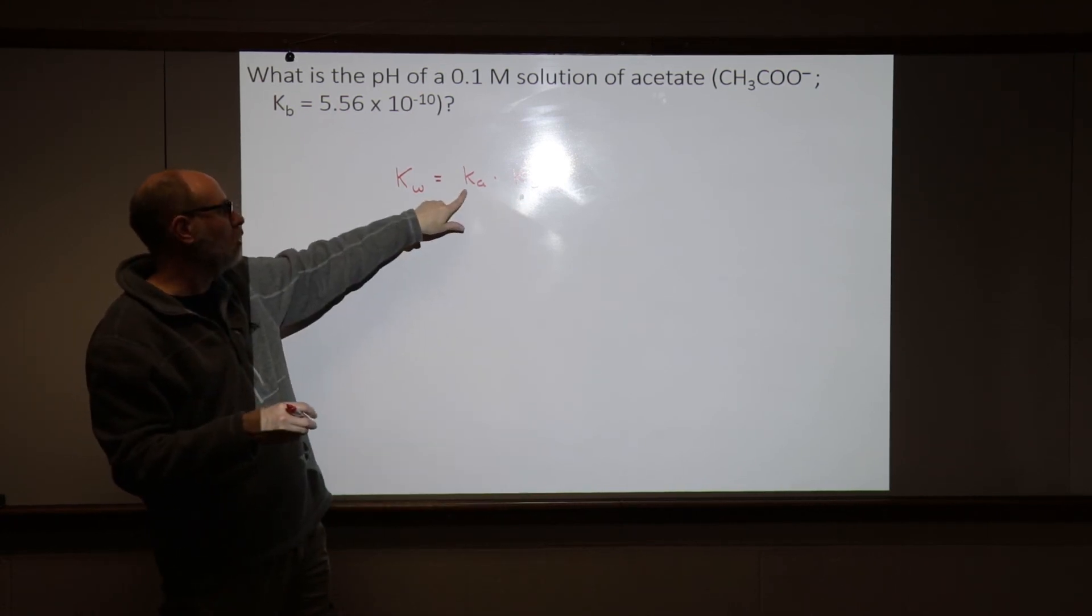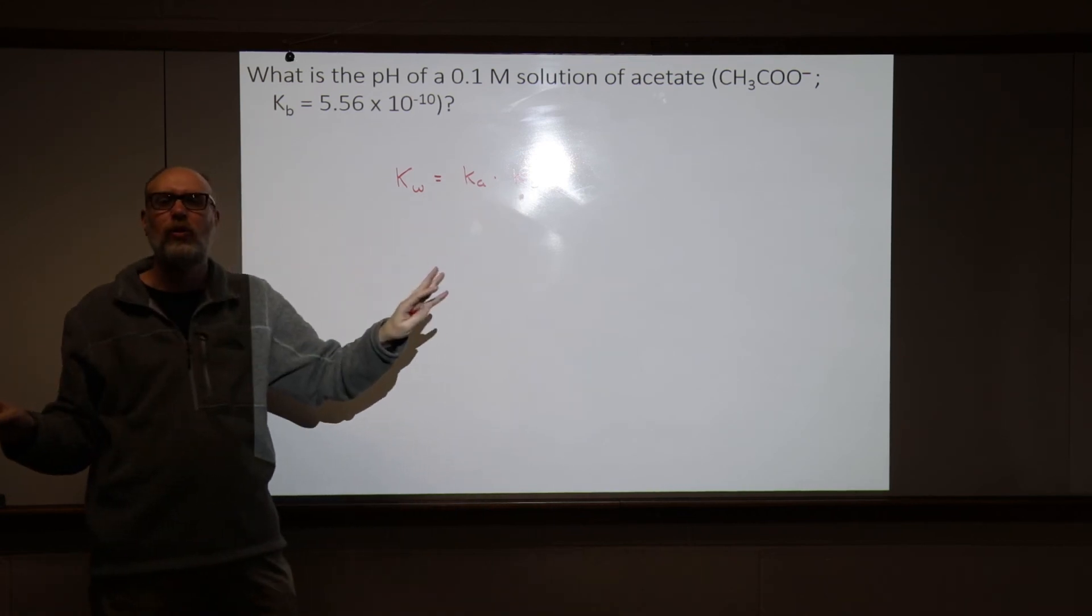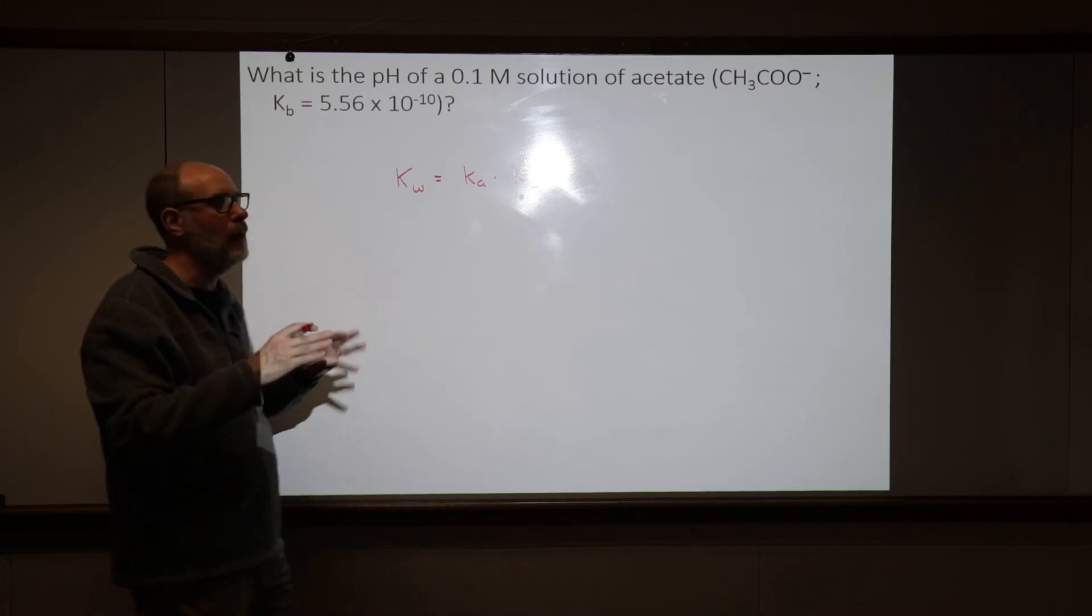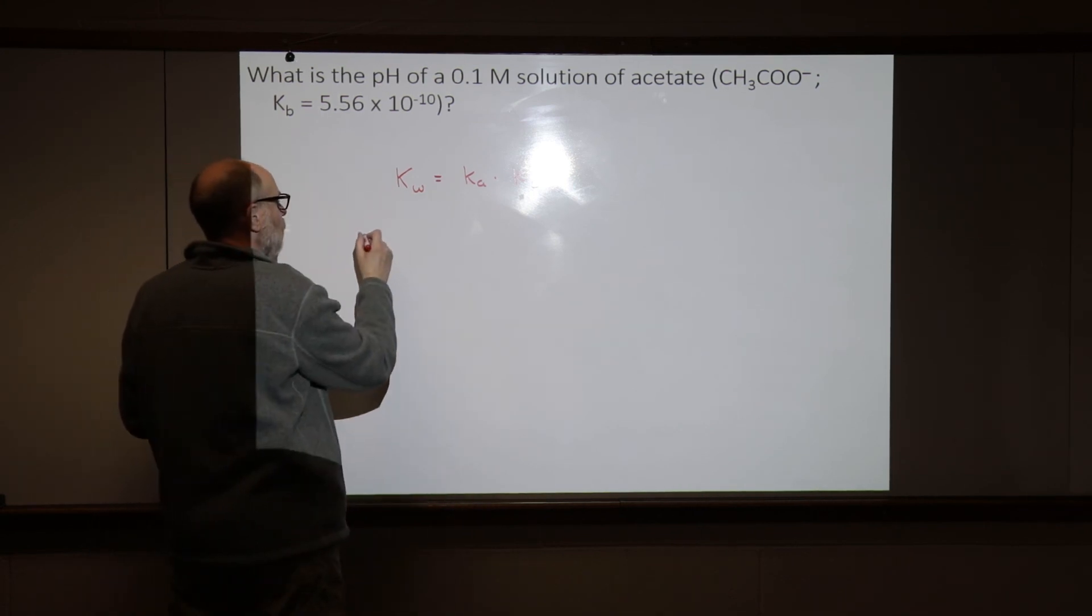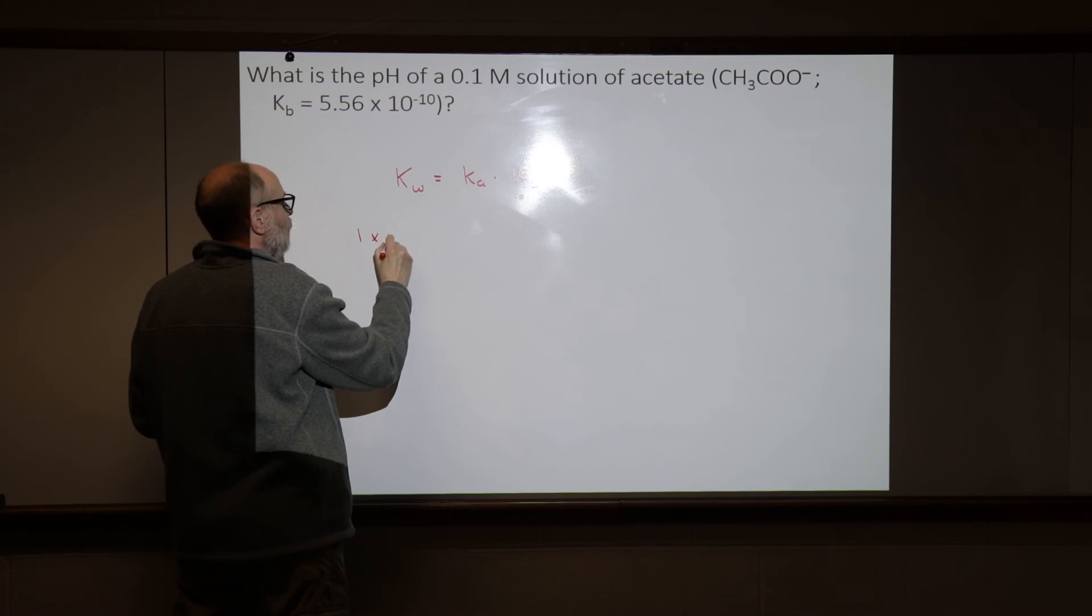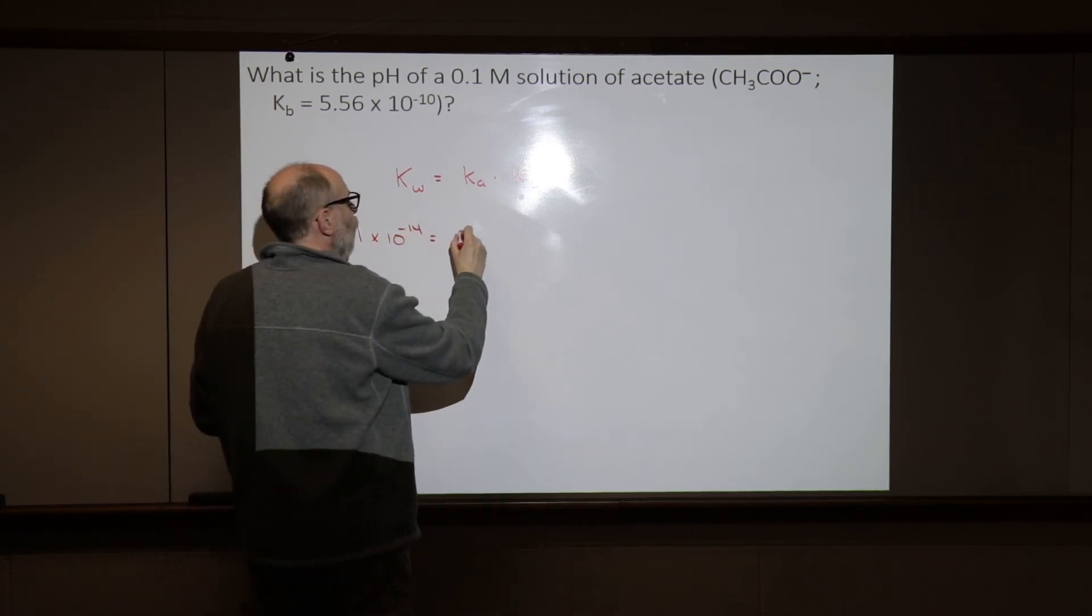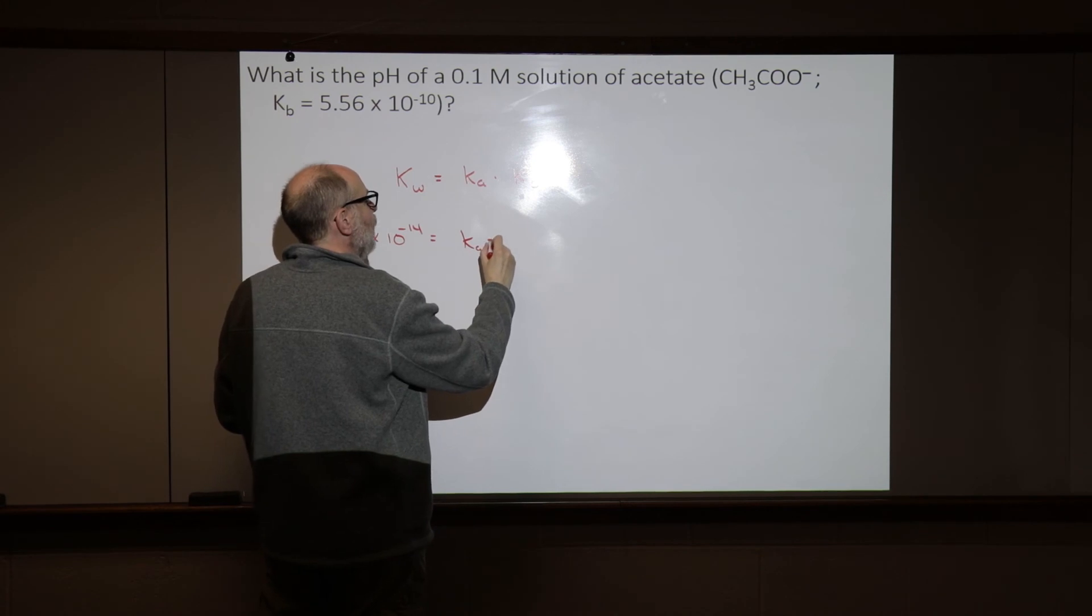If this were hydrochloric acid and that were sodium hydroxide, out the door, okay? So, it has to be conjugate acid-base pair that we're talking about. We know that Kw is 1 times 10 to the minus 14th, all right? If we want to know what the Ka of acetic acid is,